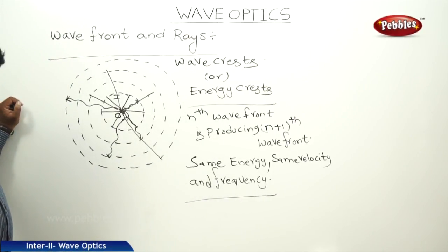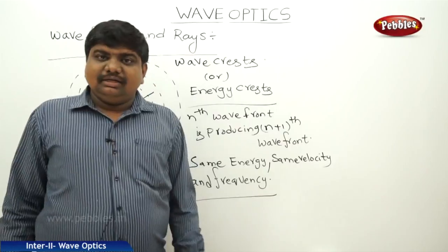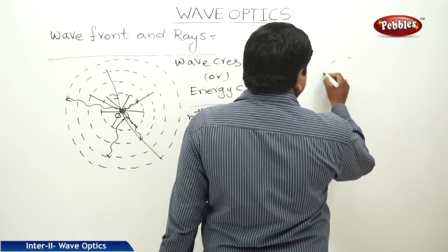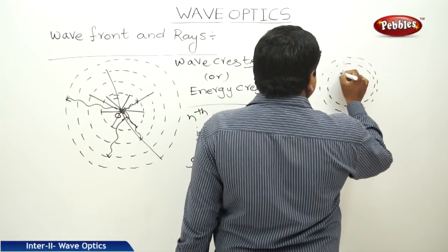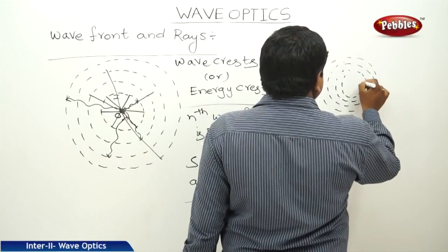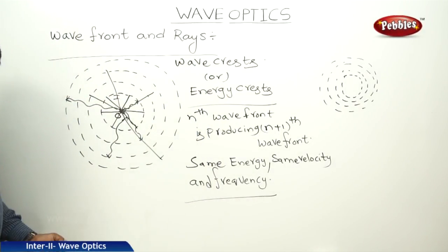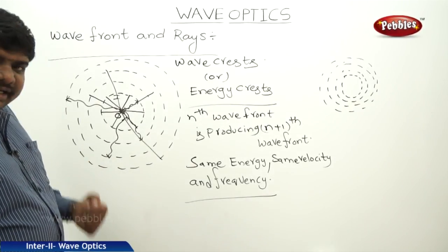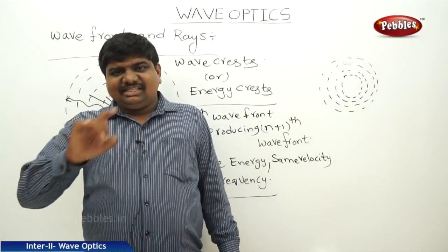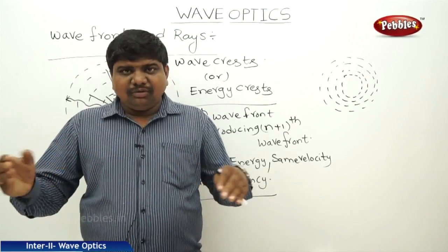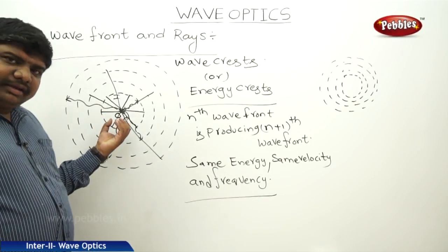These wave fronts are similar to the wave fronts offered by a light ray. Whenever a light ray is focused on a wall, it occupies the wave form with alternative dark and bright fringes. So, these wave fronts are created like that — like a river, a bucket of water, a stone drop or disturbance. Wave fronts travel from the point of disturbance in a circular form to long distances.